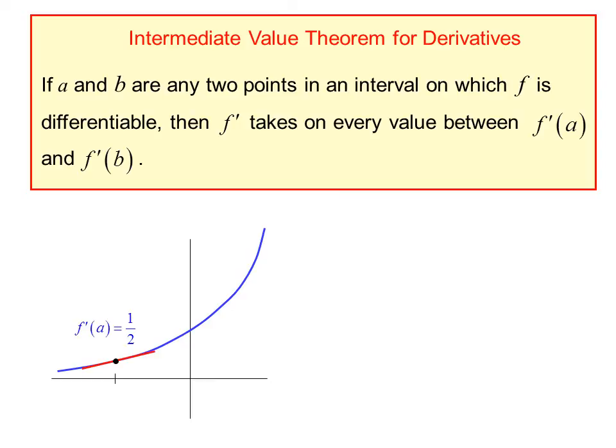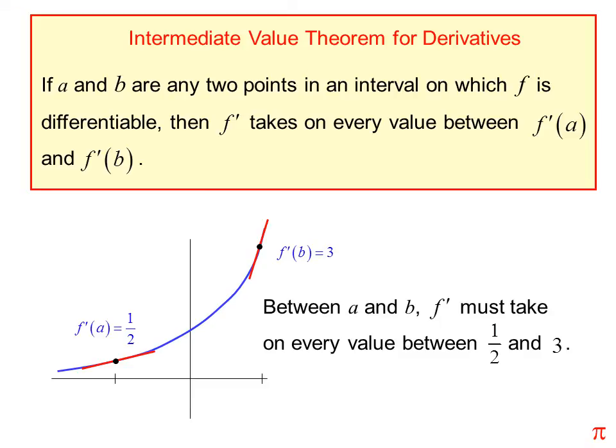f'(a) = 1/2, that's the slope at point a. f'(b) = 3, which is the slope at point b. Between a and b, f' must take on every value between 1/2 and 3. As the slope gradually increases, it must take on every slope between 1/2 and 3.